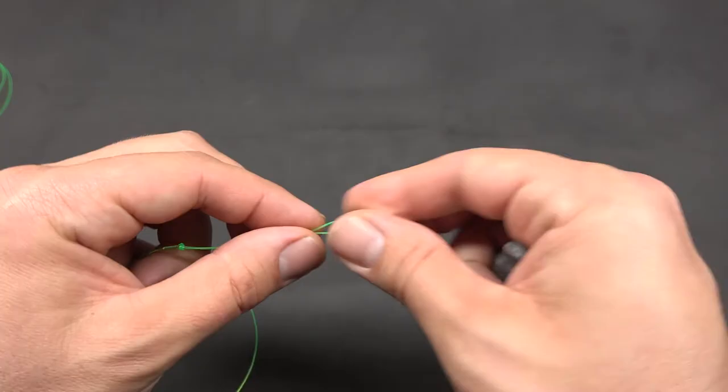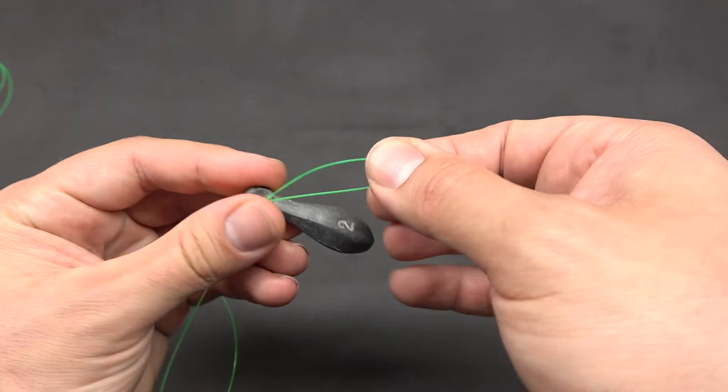The idea behind this loop is that you just fold it over and pass it through your lead, then pass the lead back through the loop, and pull tight.